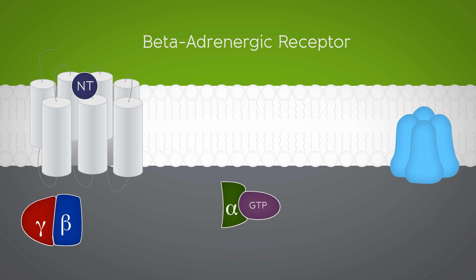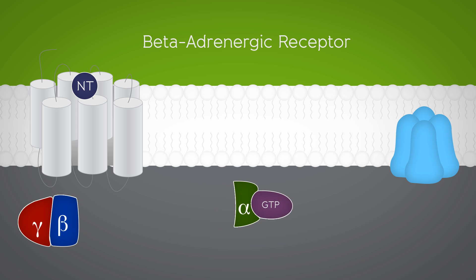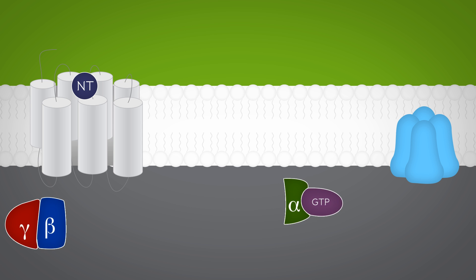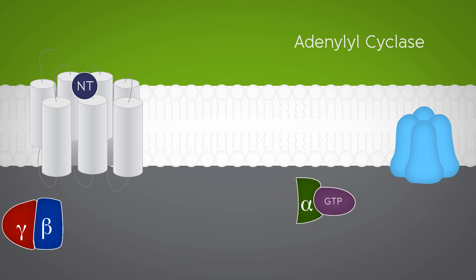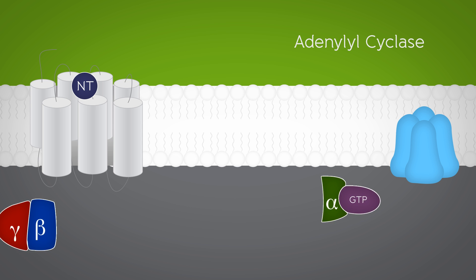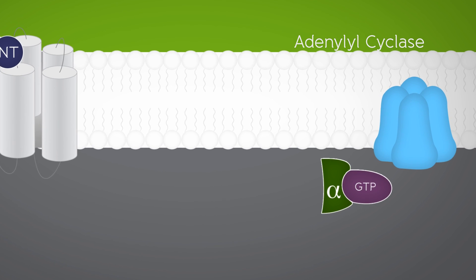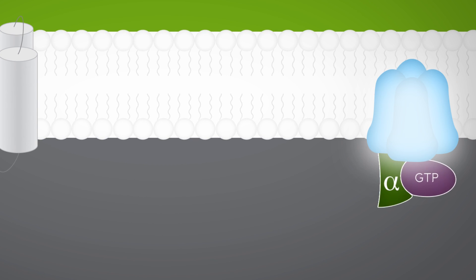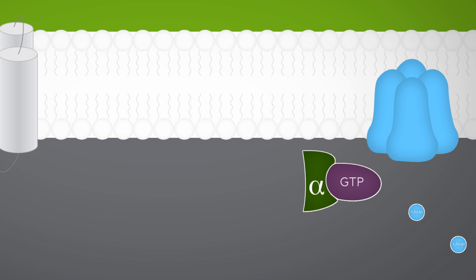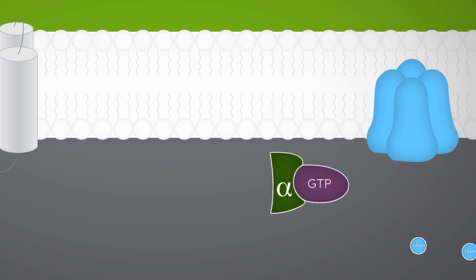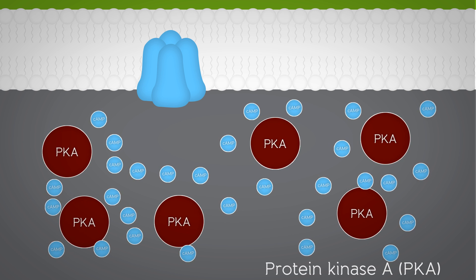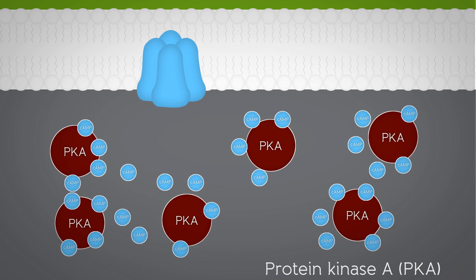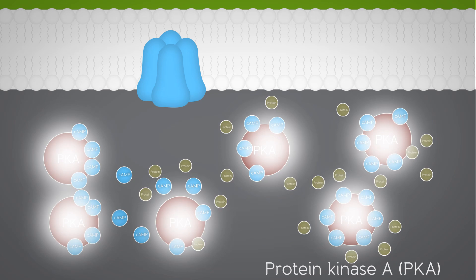Once this receptor is stimulated and the G-protein activated, the alpha subunit binds to an enzyme known as adenylyl cyclase. This, in turn, increases the production of cyclic AMP, which is the second messenger. Cyclic AMP will go on to activate protein kinase A, PKA, which in turn regulates a number of different proteins.